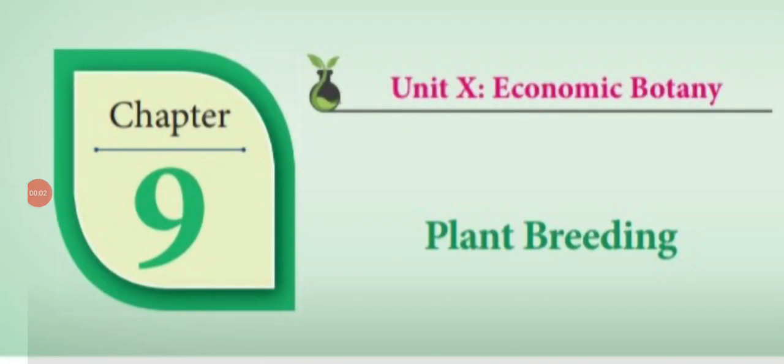Good morning students. This is Class 12 standard bio-botany video class, video 3. In this video we are going to continue the lesson on plant breeding. In the previous video class we have seen seaweed liquid fertilizer, biopesticides such as Beauveria and Trichoderma, the green revolution, types of green manuring — in-situ and green leaf manuring — and the objectives of plant breeding. Now we are going to see conventional methods of plant breeding and different methods of plant breeding in this video.